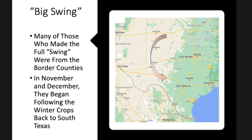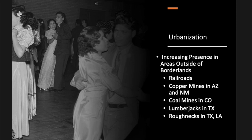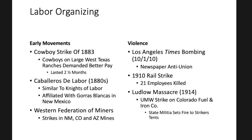This migration also included workers' children and whole families, so education was affected as well. For Mexican American communities moving into urban areas, there was an increased presence not just in traditional border regions — they were moving into Minnesota, Iowa, California, and Northern California like San Francisco. Some were railroad workers and their families following the railroads. There was also mining in some areas, lumberjacks in East Texas, and Mexican American workers in the oil fields in Texas, Louisiana, and California.